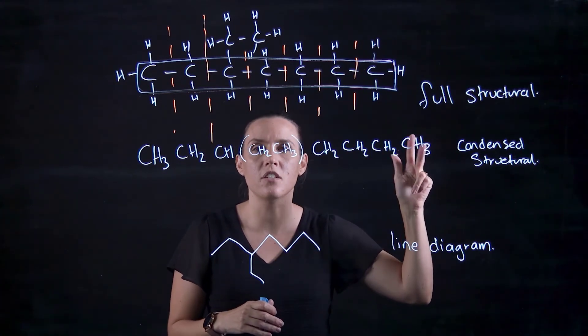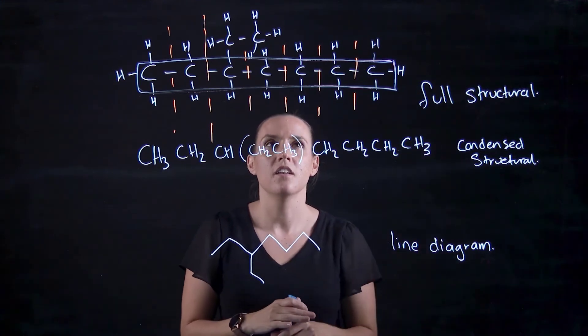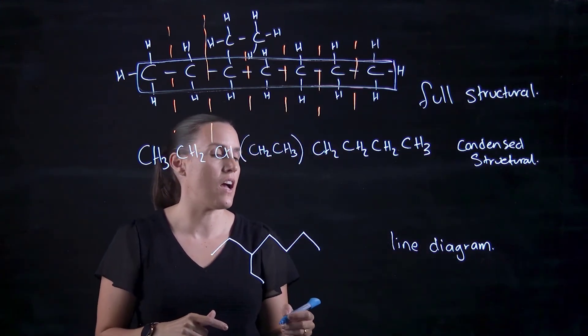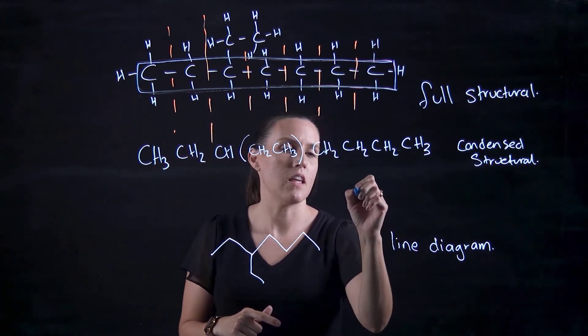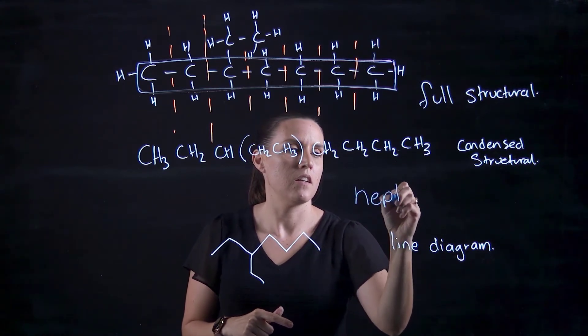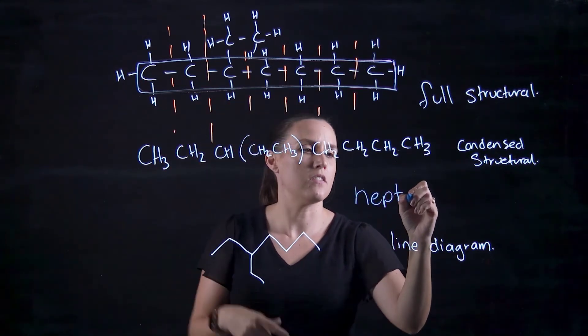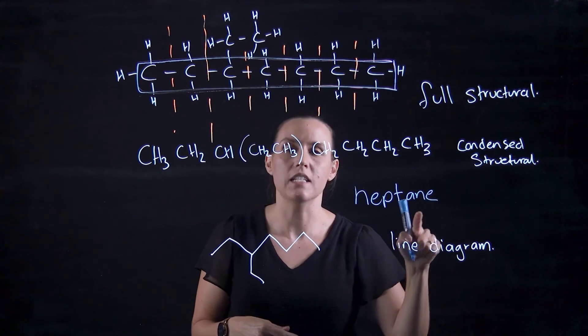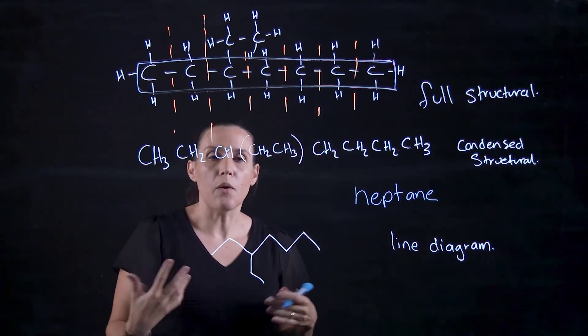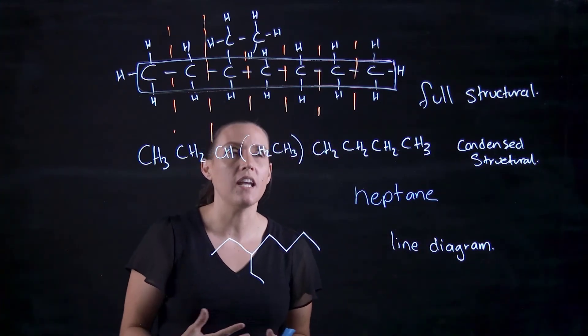So if we continue on, it's oct, non, dec. So this one here is a seven carbon, so it's the hept. It's all single bonds, so I put A and E to indicate that it's an alkane.